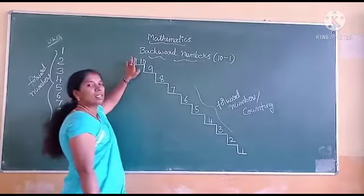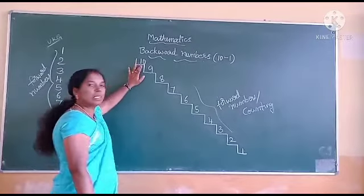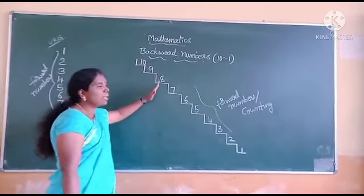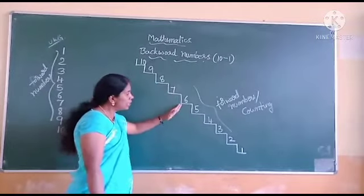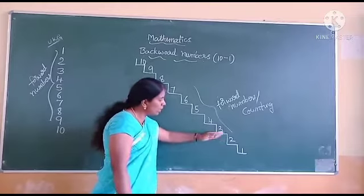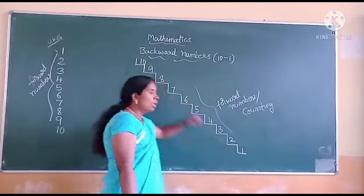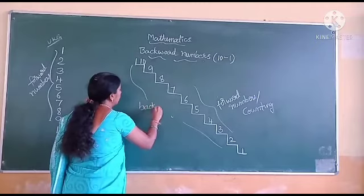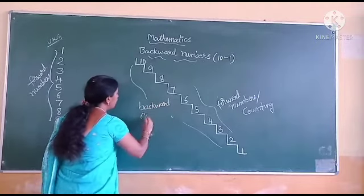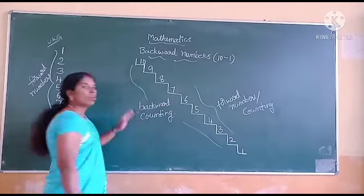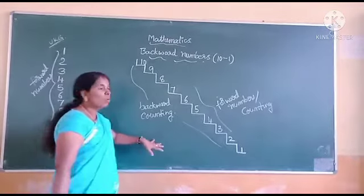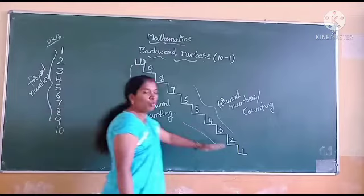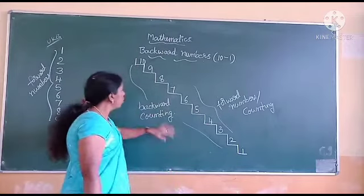Here we can see the number 10 at the top. 10, 9, 8, 7, 6, 5, 4, 3, 2, 1. This way we call backward counting. Backward means we move from the end, from the back to front. This is called backward counting.